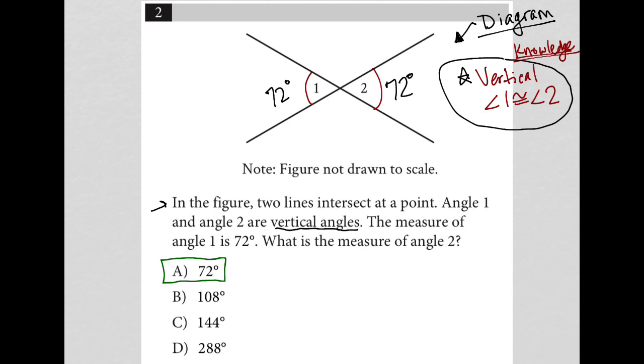Another way to think about this, even if you did not know or remember about vertical angles, is maybe you remember about supplementary angles. So if this is 72 here, then I could say, well, this angle right next to it...